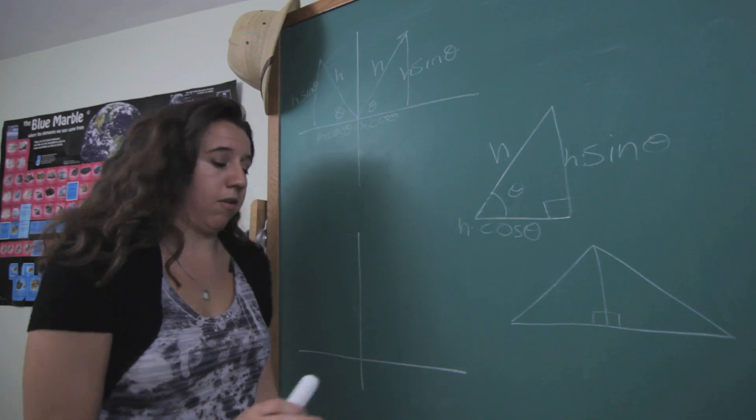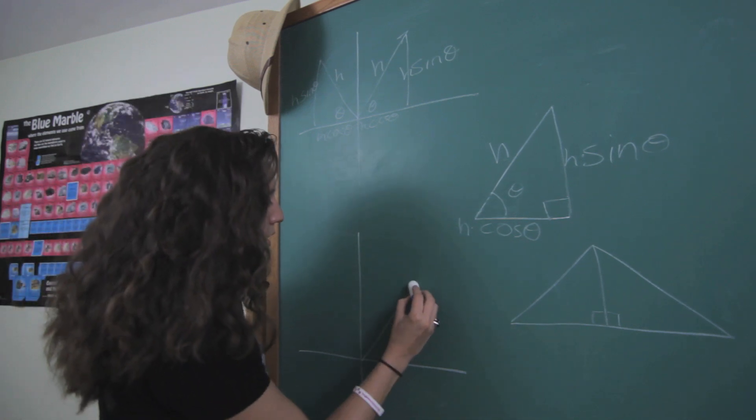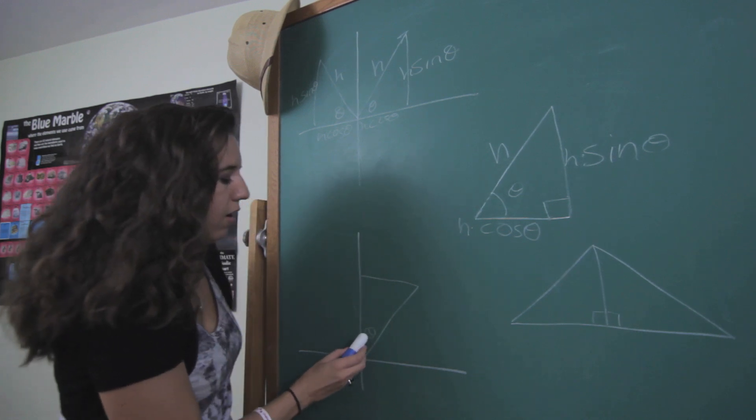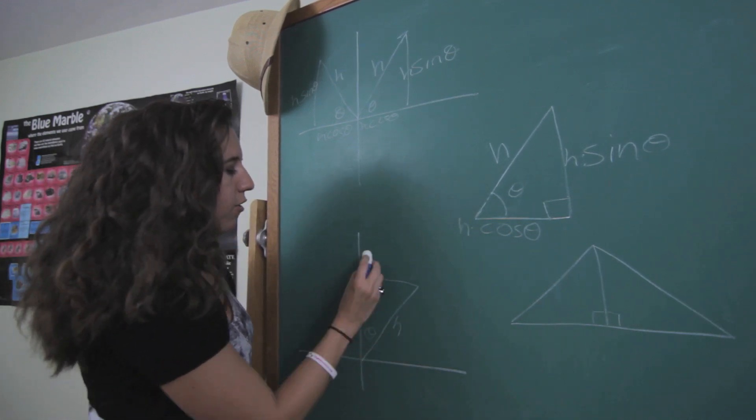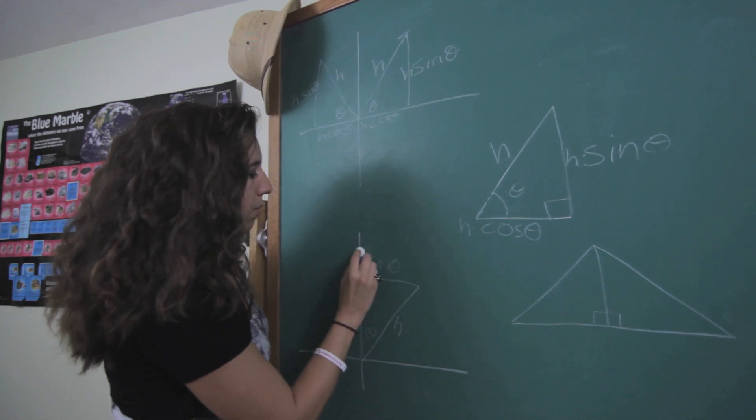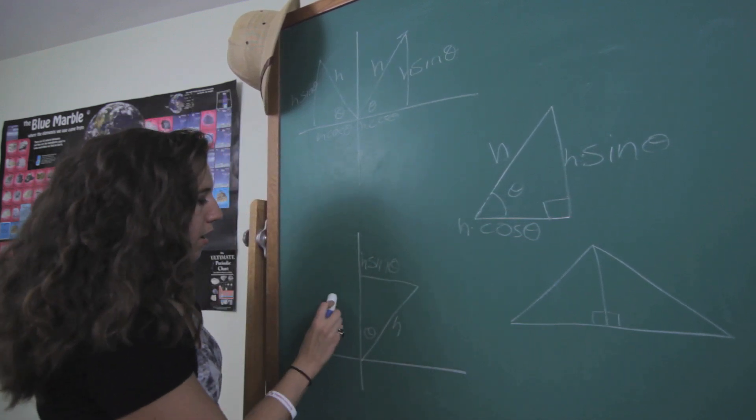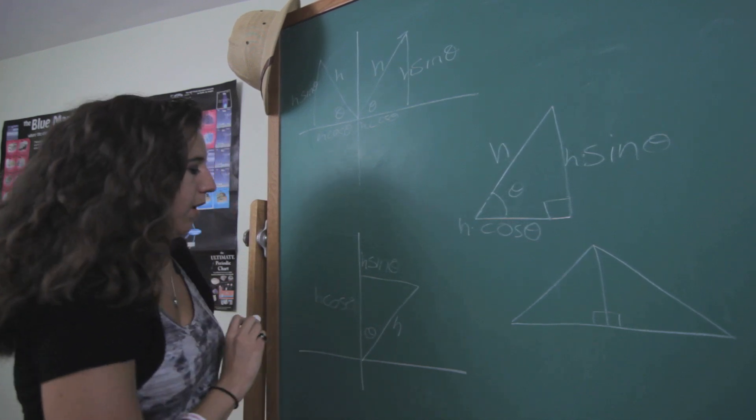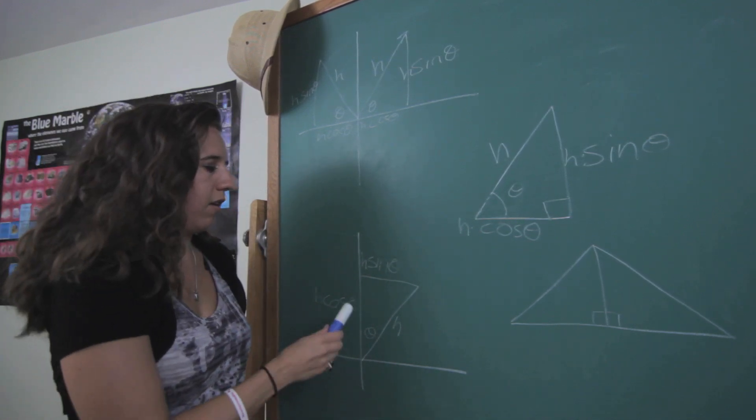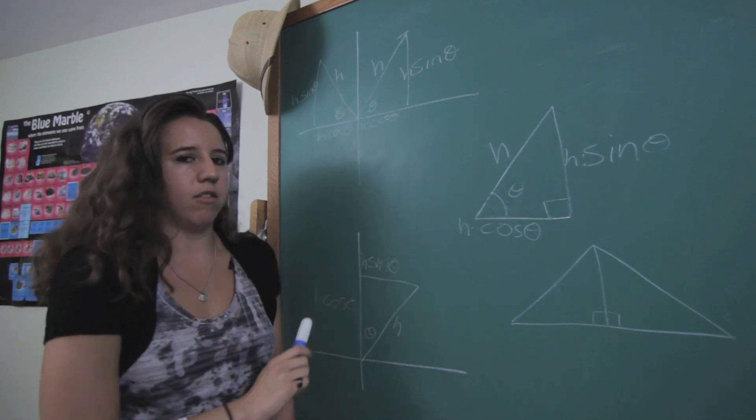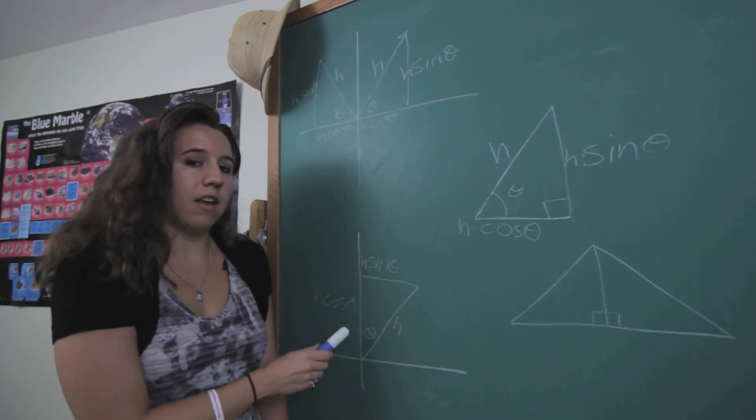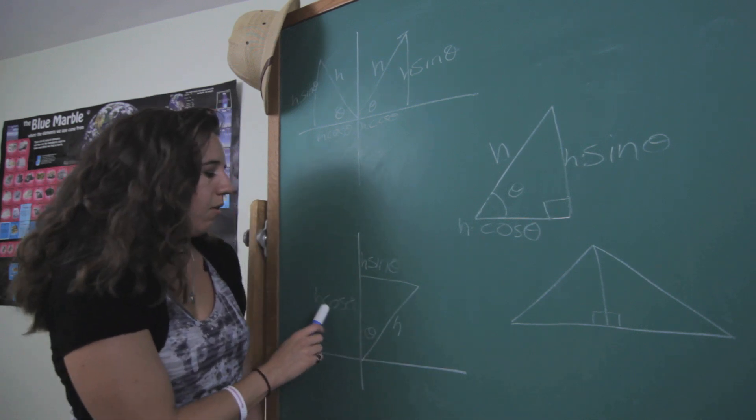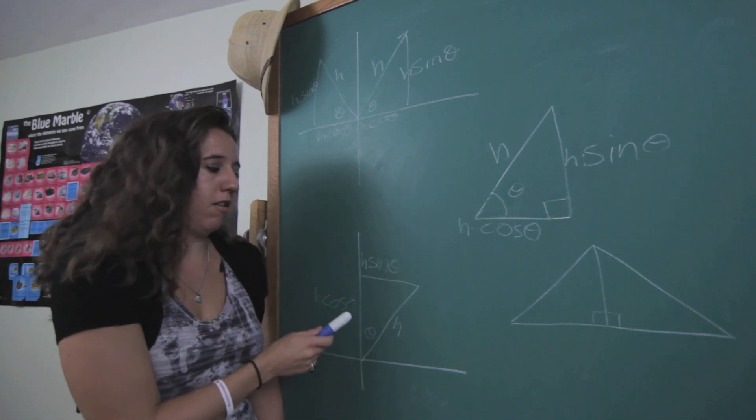But this is why you can't do that. Let's pretend that your theta instead is measured right there. This is still going to be your H, but now up here is going to be your sine theta. And over here is going to be your cosine theta. So instead of trying to say that cosine is your horizontal and sine is your vertical, instead say that sine is whatever side is opposite of theta and cosine is whatever side is adjacent to theta.